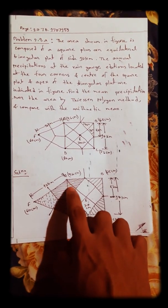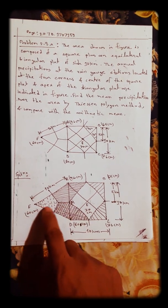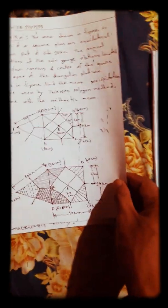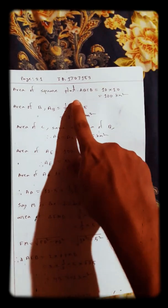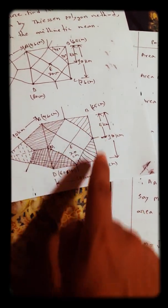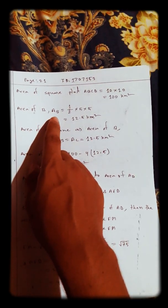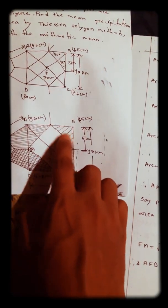AM is 5 kilometers, and we draw a perpendicular line FM which bisects the triangle. The area of the square plot A-B-C-D: since the side is given as 10 kilometers, the area is 10 × 10 = 100 square kilometers.